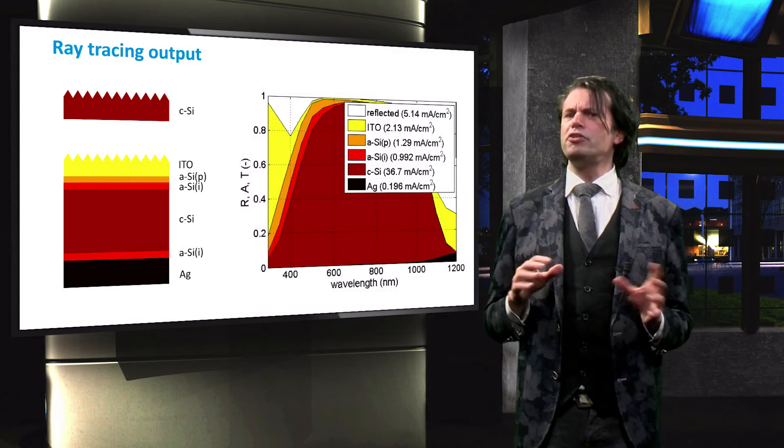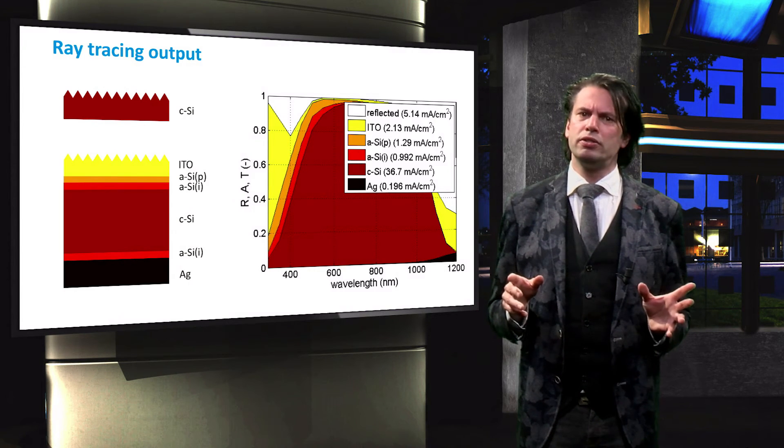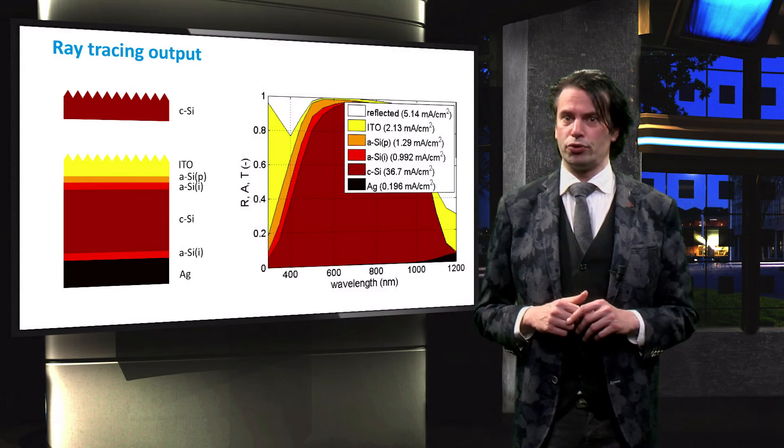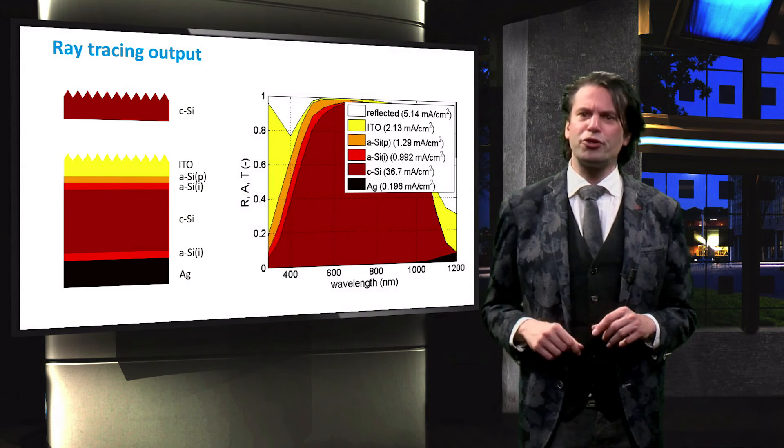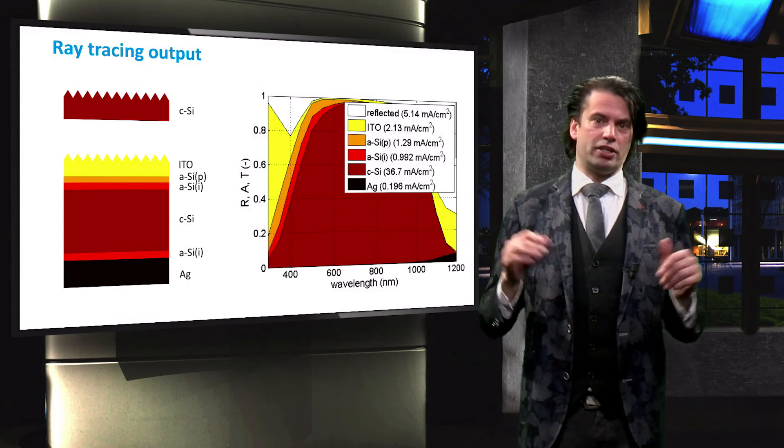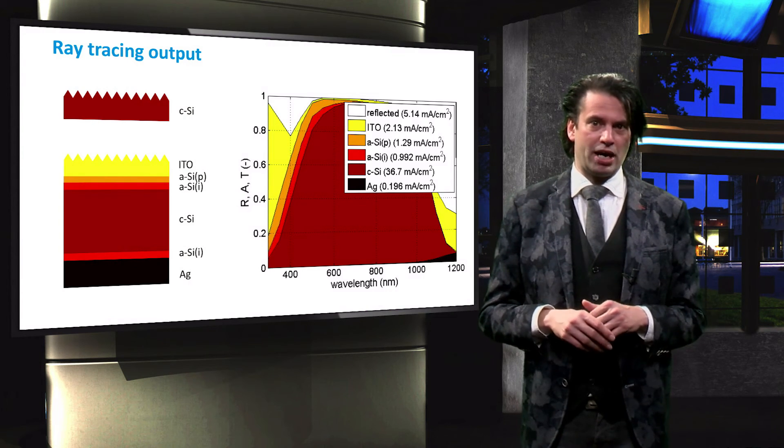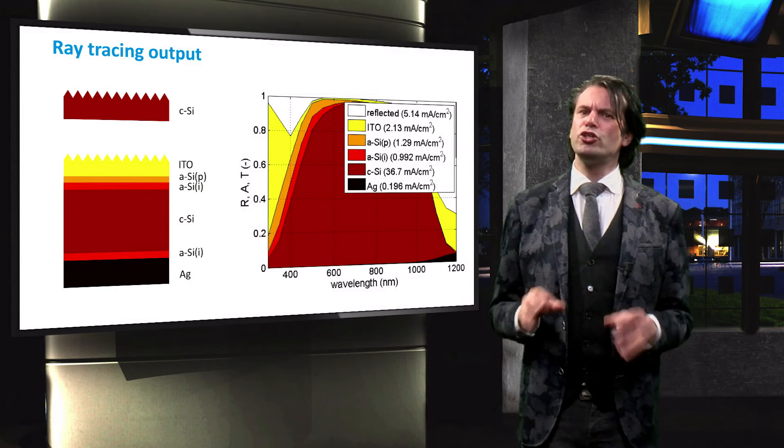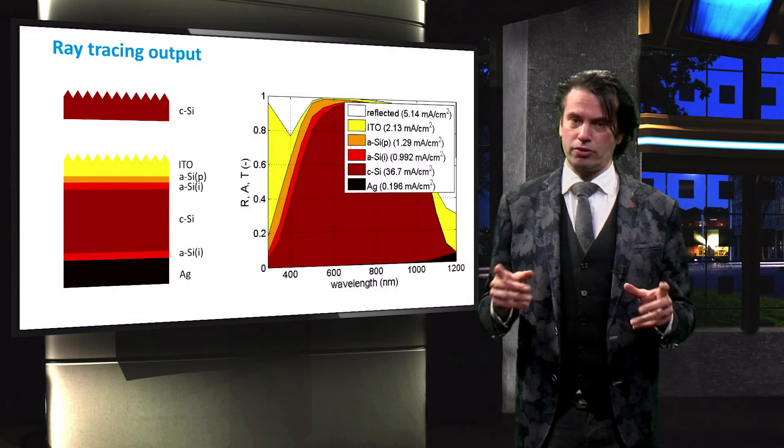Since the properties of the materials involved are known, the ray tracing simulation outputs an applied photocurrent. This photocurrent is computed by weighing with an AM 1.5 solar spectrum and is purely optical. This means that it does not take into account electrical losses.